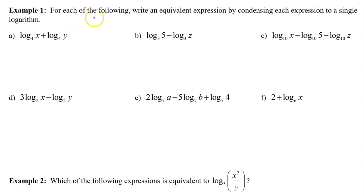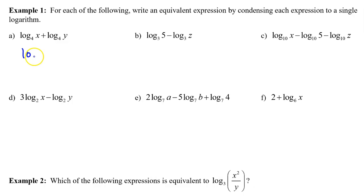Example 1. For each of the following, write an equivalent expression by condensing each expression to a single logarithm. Part a: the sum of two logs can be written as the single log of a product. So in this case, we would write log base 4 of x times y. And that's the answer.